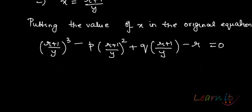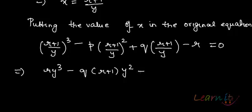The x term has been completely transformed into y term and y is the given root. So when you just open it up using all the formulas for cube and square, you will get ry³ - (qr + r + 1)y² + p(r+1)²y - (r+1)³ = 0.